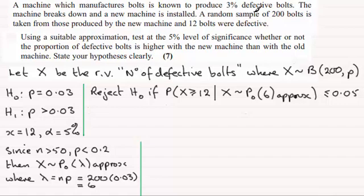We were told that the machine produced 3% defective bolts. So assuming that P is still 0.03, the null hypothesis, the alternative hypothesis was P was greater than 0.03.